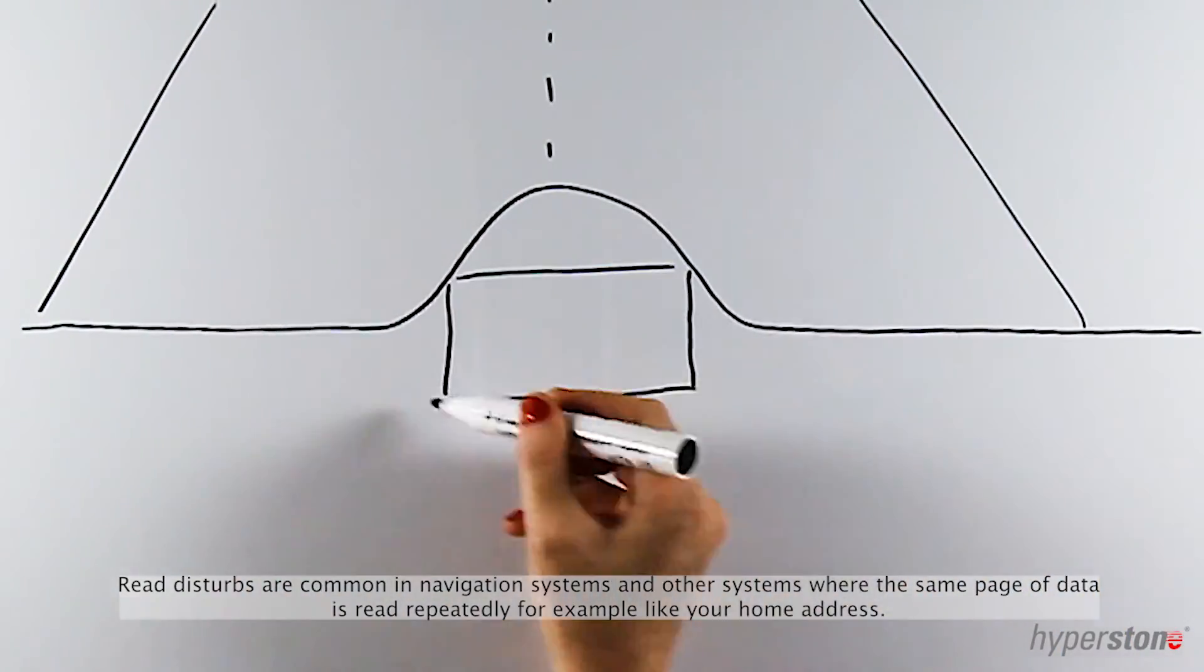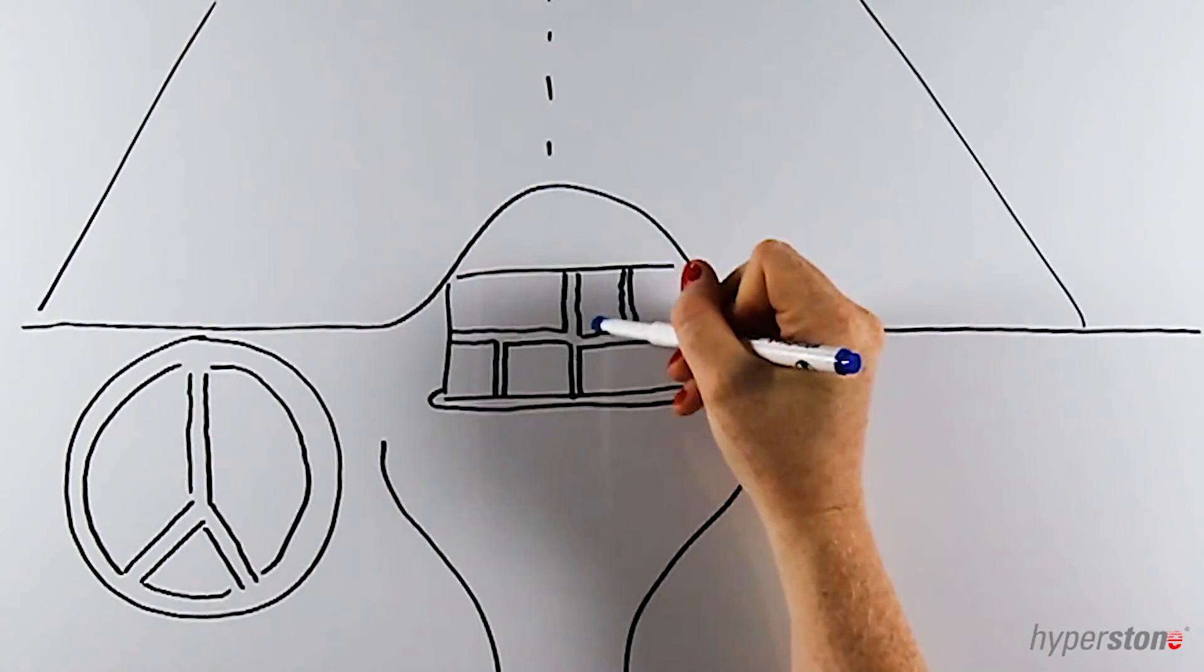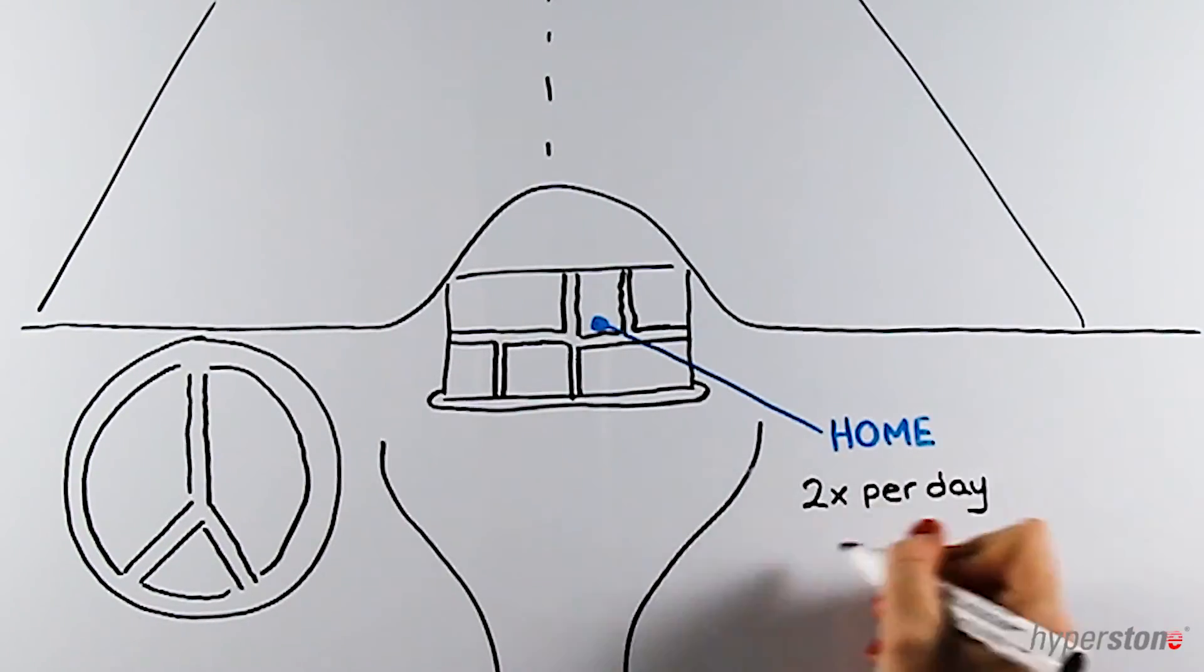Read disturbs are common in navigation systems and other systems where the same page of data is read repeatedly, for example the data representing your home address.